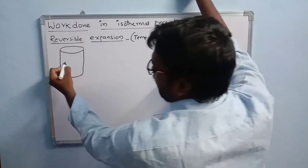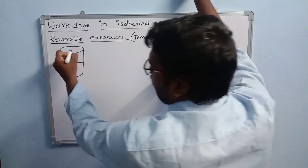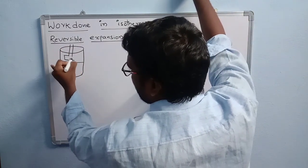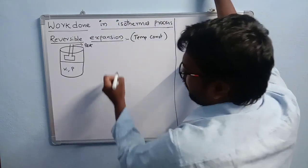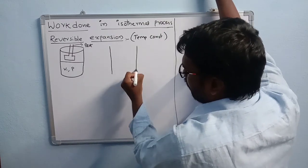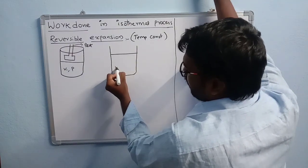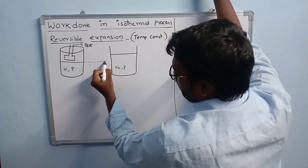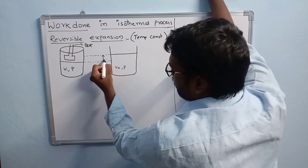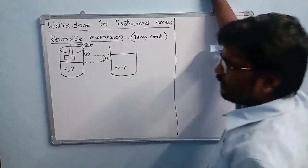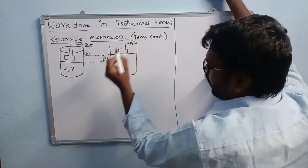I take a cylinder containing an ideal gas. The volume of the ideal gas is V1 and the initial pressure is P. On this gas, we apply external pressure using a weightless frictionless piston, so the external pressure is P_external. After expansion, the volume of the gas increases to V2. The displacement is taken as dl and the area of cross section is A.